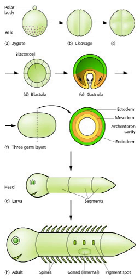New roots grow from root meristems located at the tip of the root, and new stems and leaves grow from shoot meristems located at the tip of the shoot. Branching occurs when small clumps of cells left behind by the meristem, which have not yet undergone cellular differentiation to form a specialized tissue, begin to grow as the tip of a new root or shoot. Growth from any such meristem at the tip of a root or shoot is termed primary growth and results in the lengthening of that root or shoot. Secondary growth results in widening of a root or shoot from divisions of cells in a cambium. In addition to growth by cell division, a plant may also grow through cell elongation.